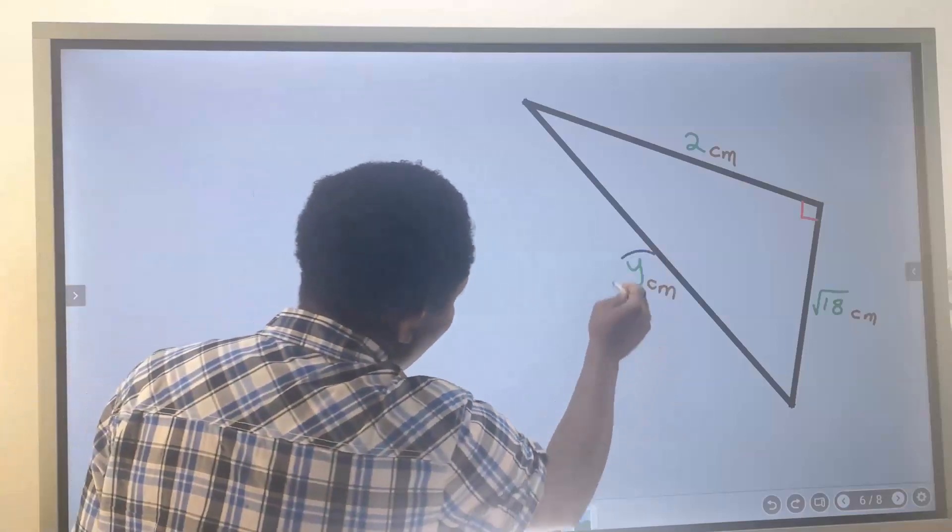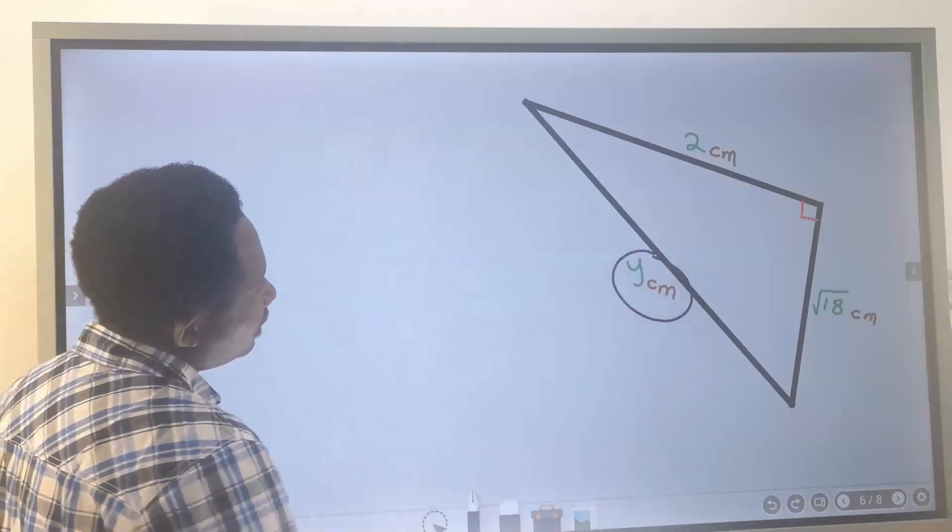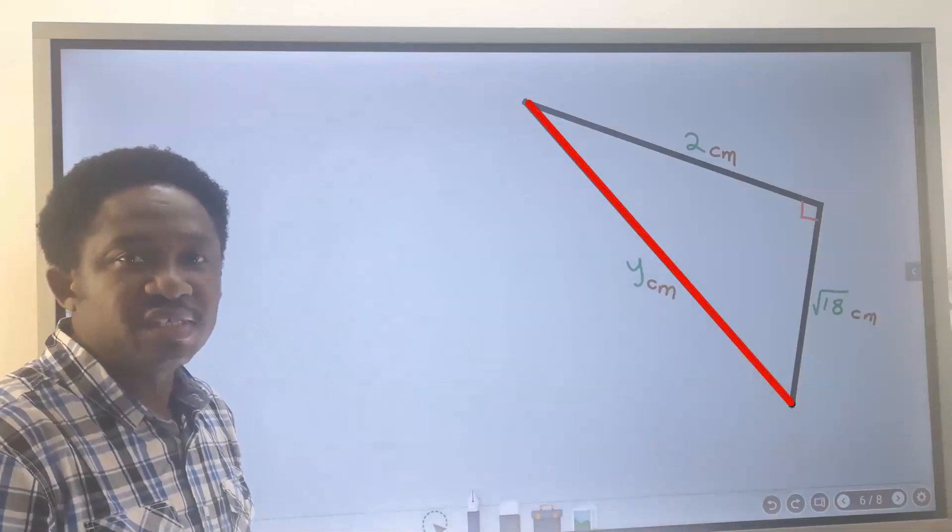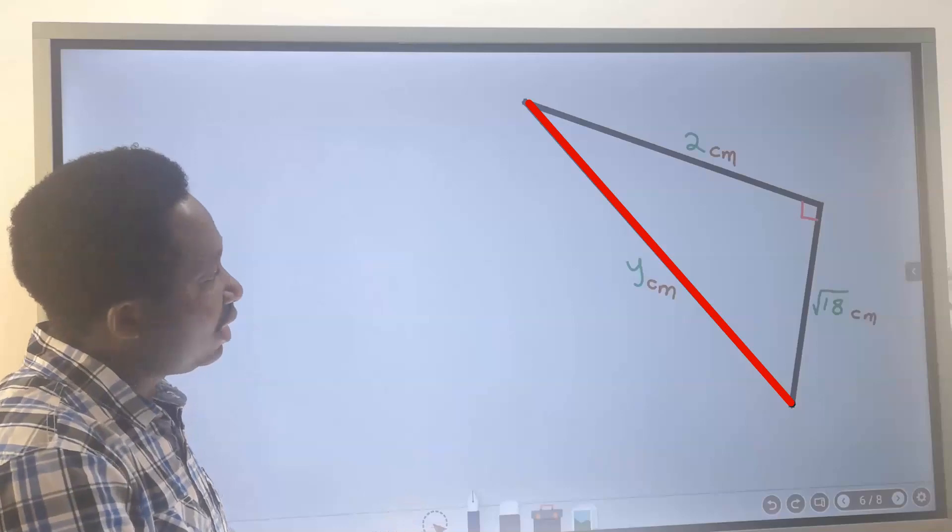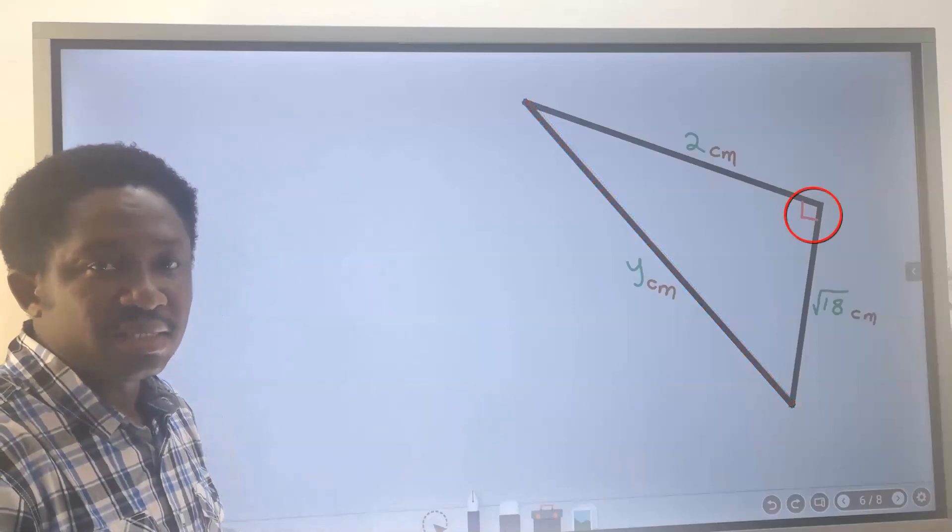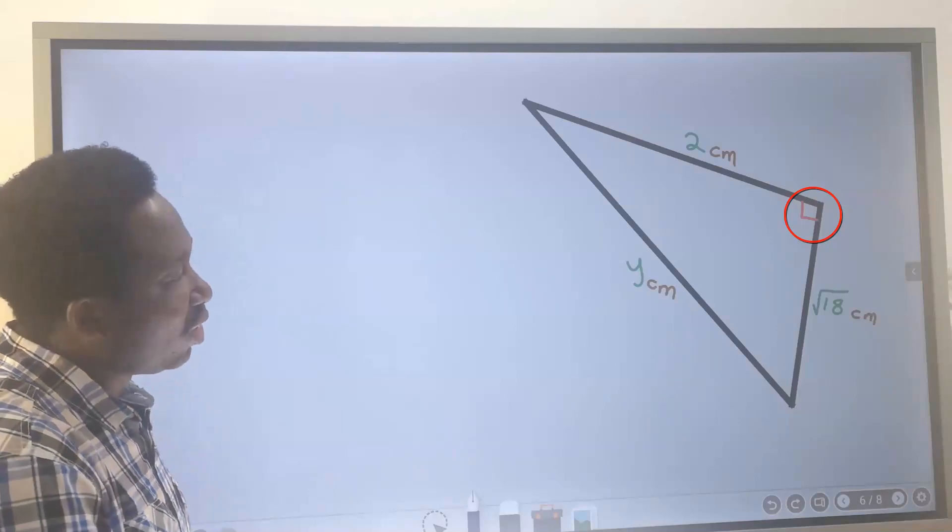Let's find the value of y, which is the length of this side. The first thing you will observe is this is a right angle triangle. Next we're going to identify the longer side.